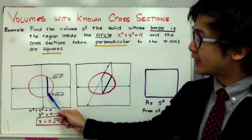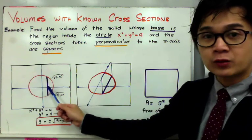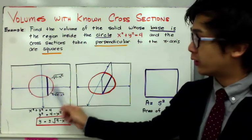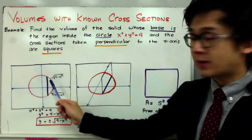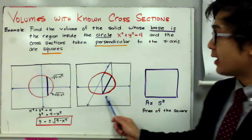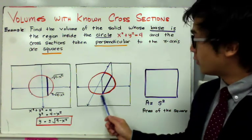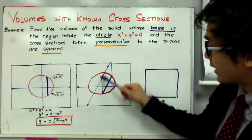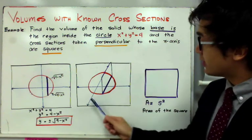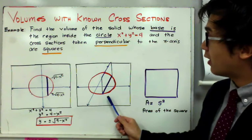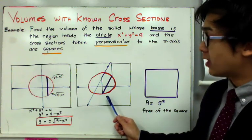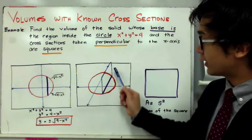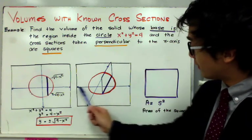You're seeing only the base of the square, but if you change the perspective of your sketch into a three-dimensional drawing, this will be the x-y plane with the base of a circle, and the cross-section is a square. This is the visual representation of the solid with a circle as its base and a square cross-section perpendicular to the x-axis.